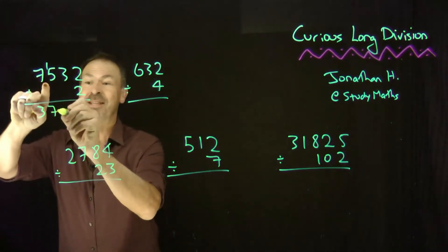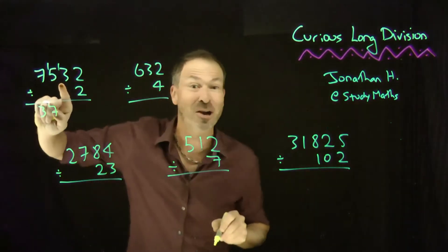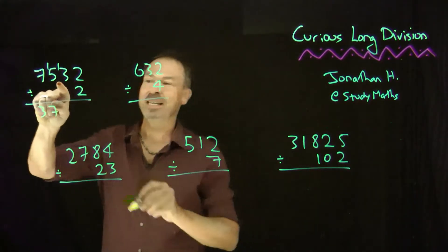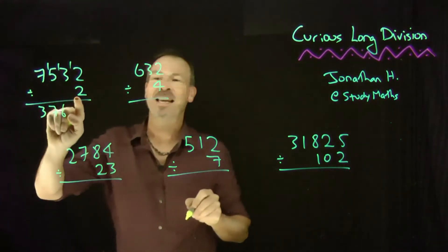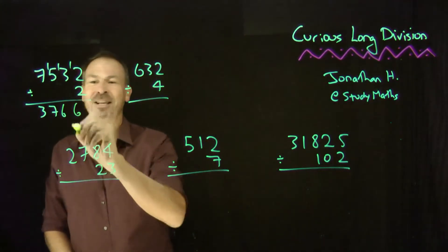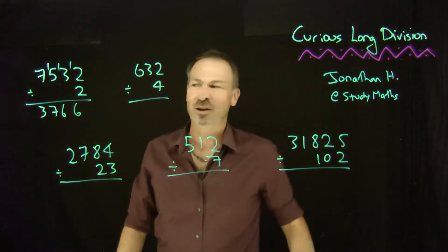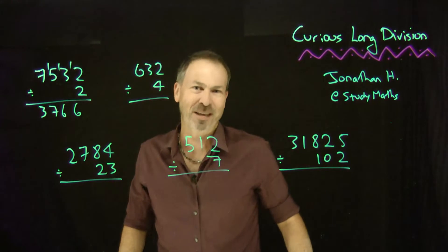It goes in 7 times with a remainder of 1, but read that as 13. How many times does 2 go into 13? It goes 6 times with a remainder of 1. And how many times does 2 go into 12? It goes 6 times. 7532 divided by 2 is indeed 3766.